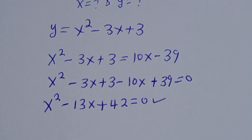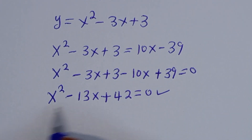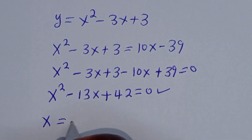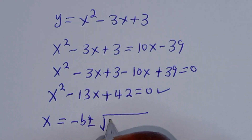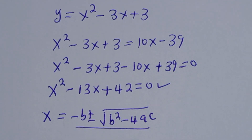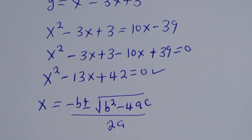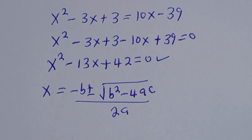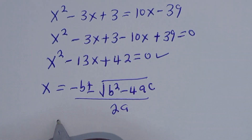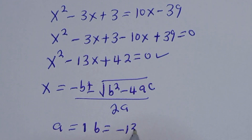This is a quadratic equation which can be solved using the quadratic formula: S is equal to minus B plus or minus square root of B squared minus 4AC, all over 2A. From our equation, A is equal to 1, B is equal to minus 13, and C is equal to 42.